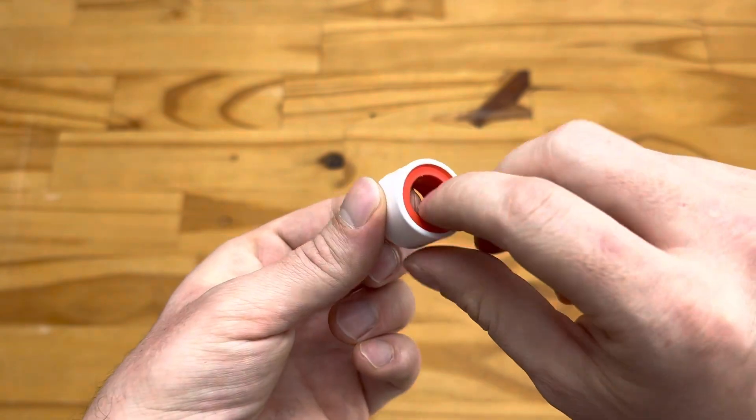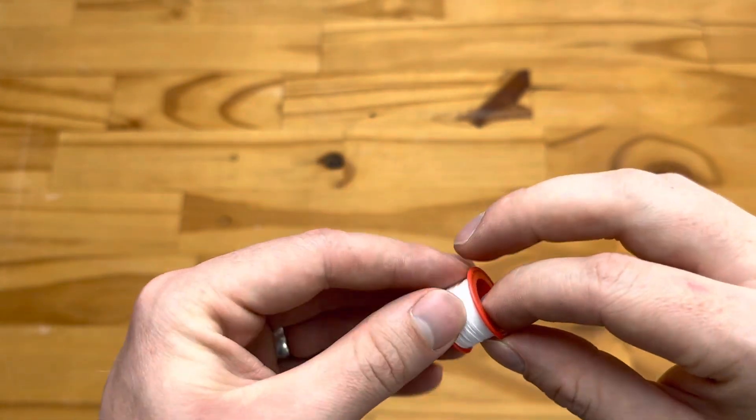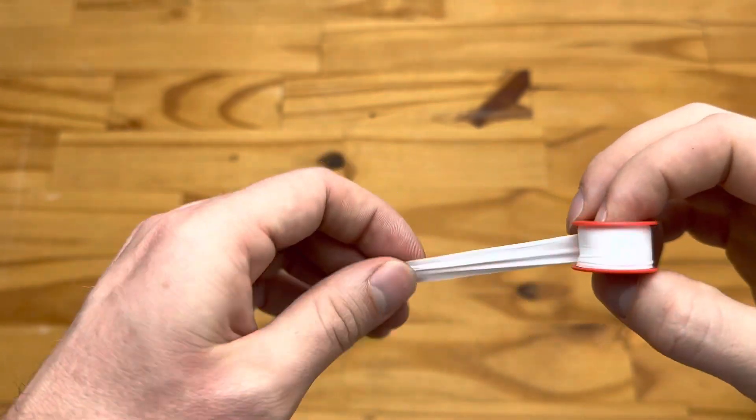Most thread tapes have this plastic cover. You just pop it off like this and then you have the thread tape material itself. This is Teflon thread tape.